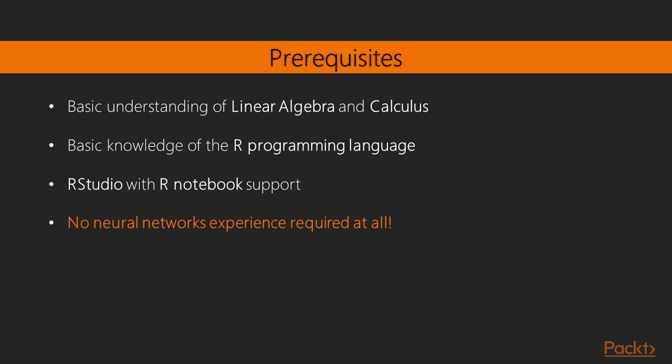There are a couple of prerequisites to this course but they aren't many and they are pretty basic. We'll need a basic understanding of linear algebra and calculus, but don't worry because if you don't have that you can simply skip the most mathematical parts and enjoy the rest of the course. Then we'll need a basic knowledge of the R language, how to install packages and run your code, especially using RStudio and the notebook format. No prior knowledge about neural networks is required at all.